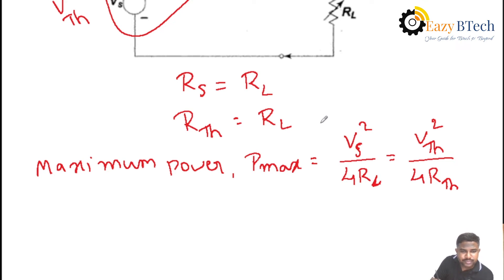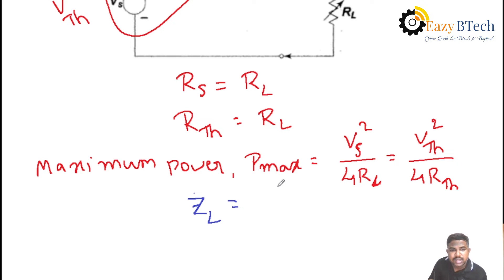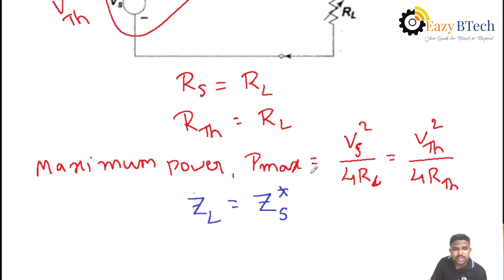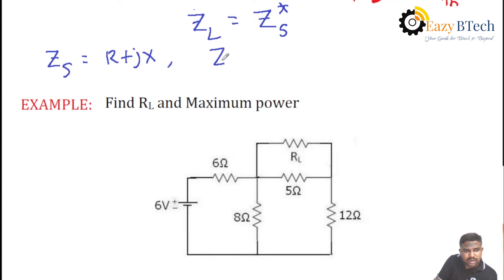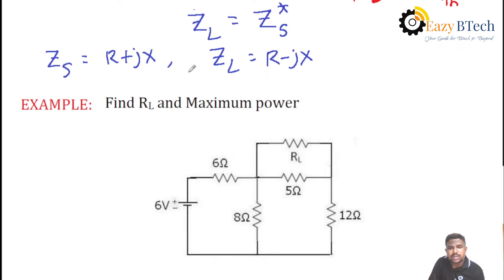In case of AC circuits, the condition is that the value of load impedance must equal the complex conjugate of source impedance. That is, Zl equal to Zs-star. If Zs equals the complex number R plus jX, then Zl equals R minus jX. This is the condition in case of AC circuits.